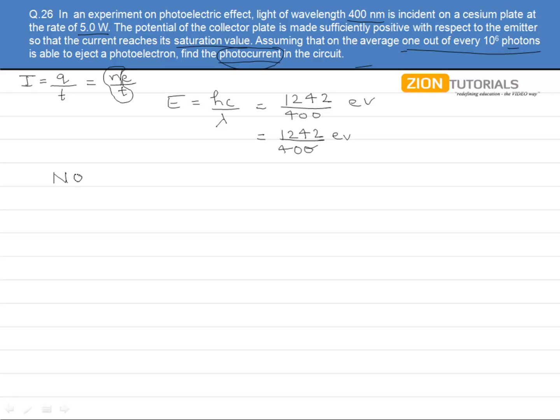We need to find the number of photons per second. How is that possible? That is possible by total energy upon energy of each photon. This is obviously going to give us the number of photons. If everything is in seconds, like the energy per unit time, this being the energy, then I can get the number of photons per unit time.